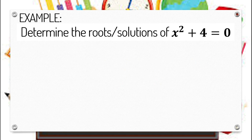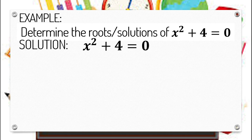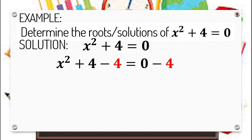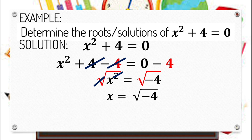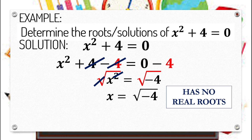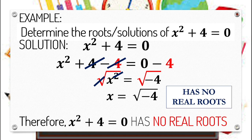Another one. Determine the roots or solutions of x squared plus 4 equals 0. We transpose 4 to the right side using the subtraction property of equality. The simplified equation becomes x squared equals negative 4. Applying extracting square roots leads to x equals square root of negative 4. Remember, there are no possible square roots for a negative radicand. Therefore, this equation has no real roots — x squared plus 4 equals 0 has no real roots.